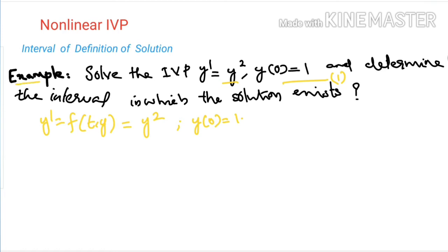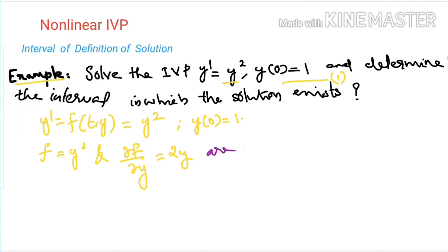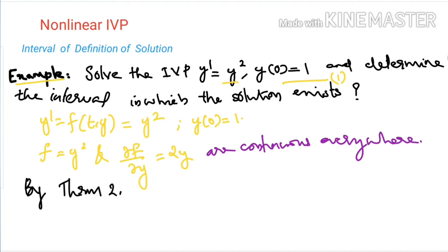By the existence and uniqueness theorem for non-linear initial value problems (Theorem 2), we can say that the function f = y² is continuous everywhere. Also, ∂f/∂y, which is the partial derivative with respect to y, equals 2y. Both f and ∂f/∂y are continuous everywhere. Since these are continuous everywhere, by the existence and uniqueness theorem (Theorem 2), this problem has a unique solution.